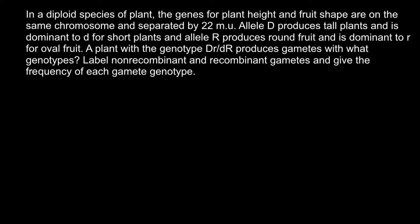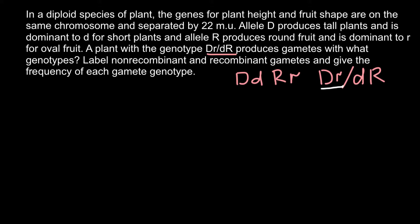Label non-recombinant and recombinant gametes and give the frequency of each gamete genotype. First, pay attention to the genotype: capital D, small r / small d, capital R. This is not the same as capital D, small d / capital R, small r, because in that case the two genes D and R would be on different chromosomes and would sort independently. But when the notation is D r / d R, that means genes D and R are on the same chromosome.